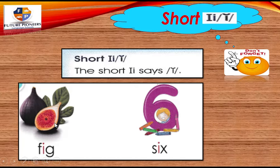Here we have a word. We want to read this word sound by sound to focus on our phonics of today. The first word: F, short I, g — fig. This is the word fig. This is a picture of fig. It is a fruit.